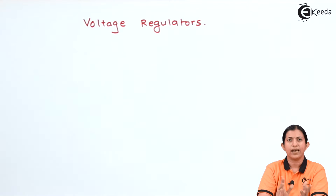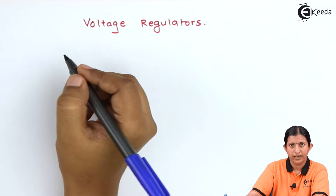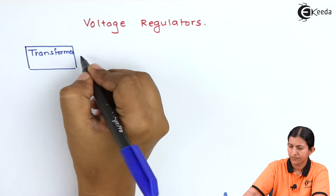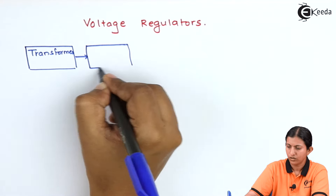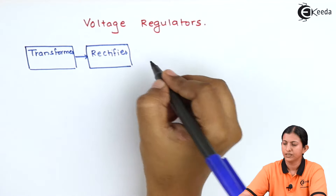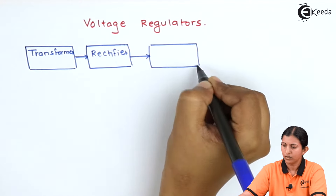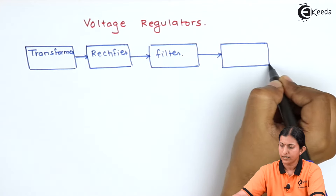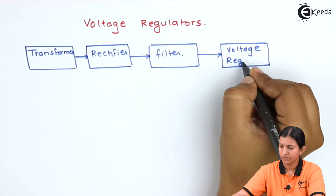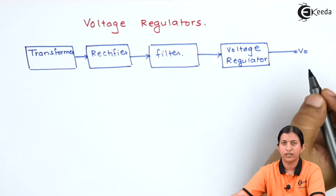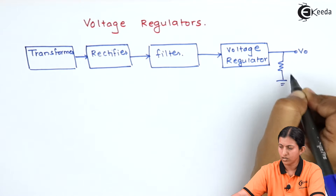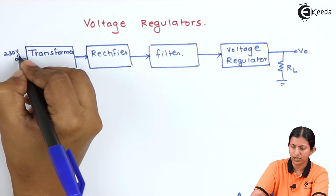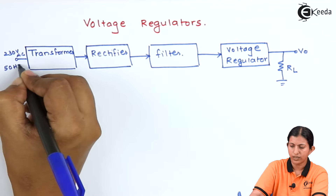We will discuss how AC supply is converted into DC supply. A regulated power supply consists of a transformer. The output of the transformer is given to the rectifier. The output of the rectifier is applied to a filter circuit, and the last stage of the regulated power supply is called the voltage regulator. The voltage regulator gives the desired output voltage across the load resistance. We apply 230 volt, 50 Hz AC input to the transformer.